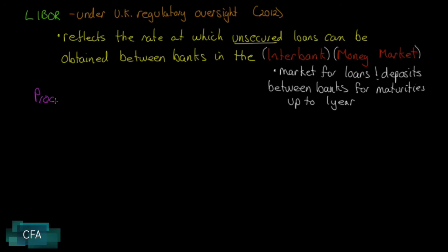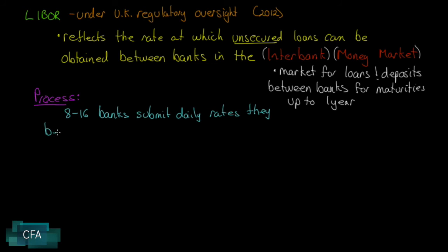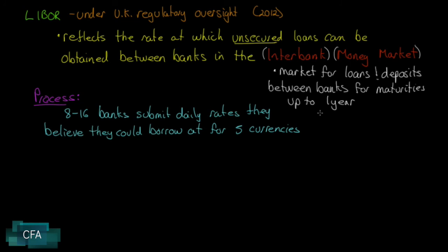Here's the process — and note that books before 2013–2014 are not updated. Now it's eight to sixteen banks that submit daily rates they believe they could borrow at. They submit rates for five currencies and seven time periods. It used to be ten currencies and fifteen time periods with no regulation; now it's five currencies and seven time periods with UK regulatory oversight, which encourages more honest rate reporting.